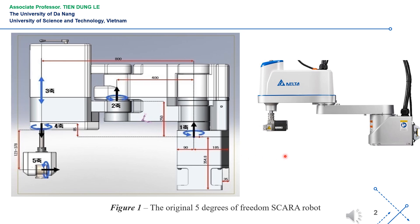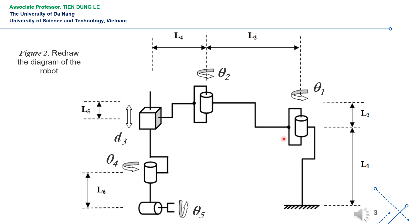The structure diagram of a 5-degrees-of-freedom SCARA robot manipulator is shown in Figure 1. We can see that the robot has four revolute joints and one translation joint: joint 1 is a revolute joint, joint 2 is a revolute joint, joint 3 is a translation joint, joint 4 is a revolute joint, and joint 5 is a revolute joint. For the convenience of analysis and calculation, the model of the robotic arm in Figure 1 is redrawn into a schematic diagram as shown in Figure 2 on this slide. The dimensions and joint variables of the robot are specifically represented in the diagram.